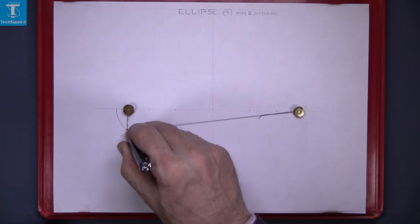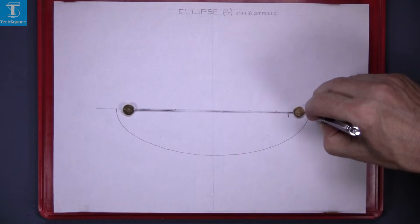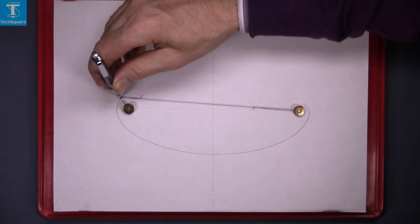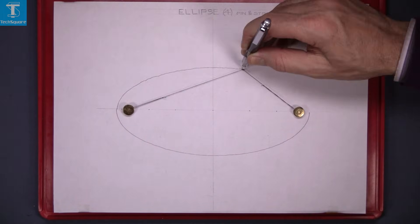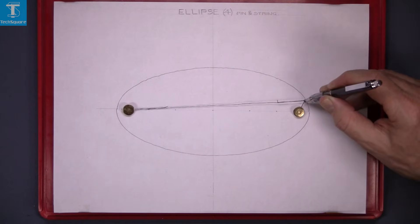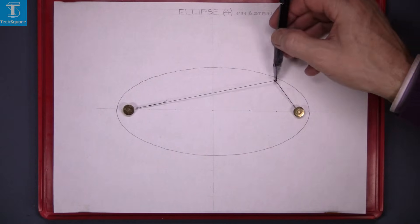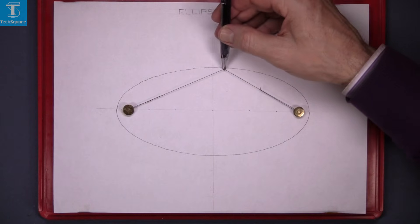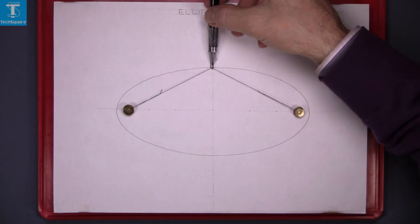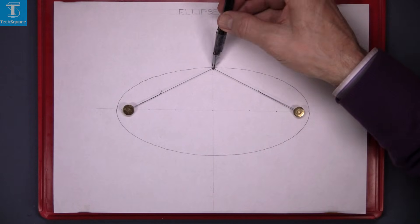Start at one end of the major axis with the string taut and the pencil in contact with the paper. Draw the elliptical curve. This is a very smooth way of drawing an ellipse but not suitable for an examination situation. The string is the length of the major axis.